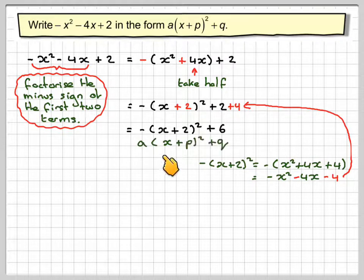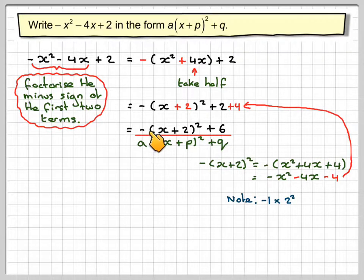That's now in the form of a(x + p)² + q. Now note you could have got this number here by just doing -1. The -1 comes from -1 times the 2².